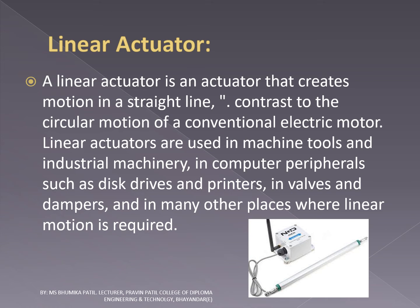Next is linear actuator. A linear actuator is an actuator that creates motion in a straight line, in contrast to the circular motion of the conventional electric motor. Linear actuators are used in machine tools and industrial machinery, in computer peripherals such as disc drives and printers, in valves and dampers, and in many other places where linear motion is required. Here is a picture of linear actuator.